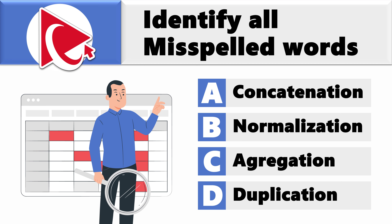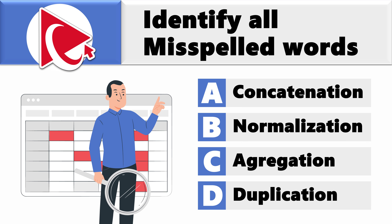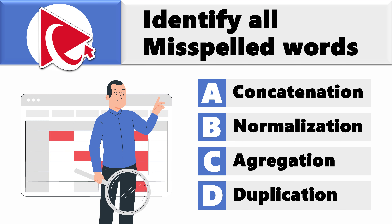The words are: Choice A — concatenation; Choice B — normalization; Choice C — aggregation; and last but not least, Choice D — duplication.